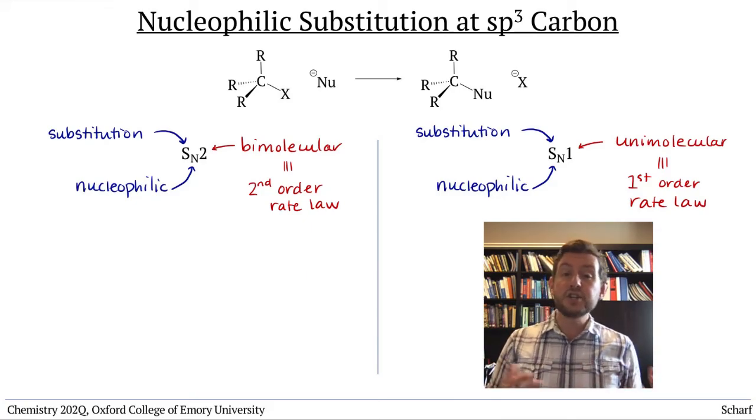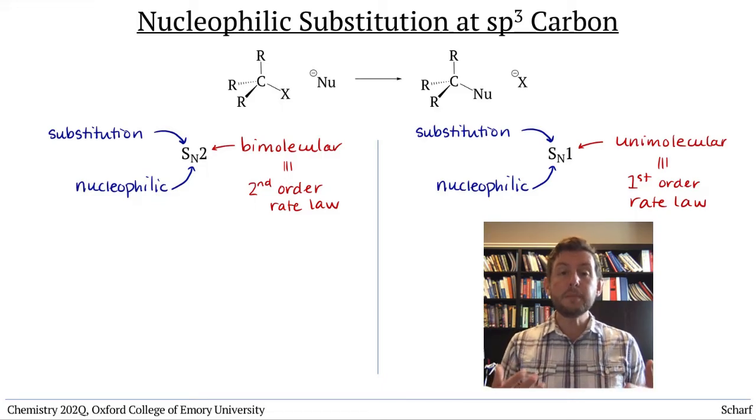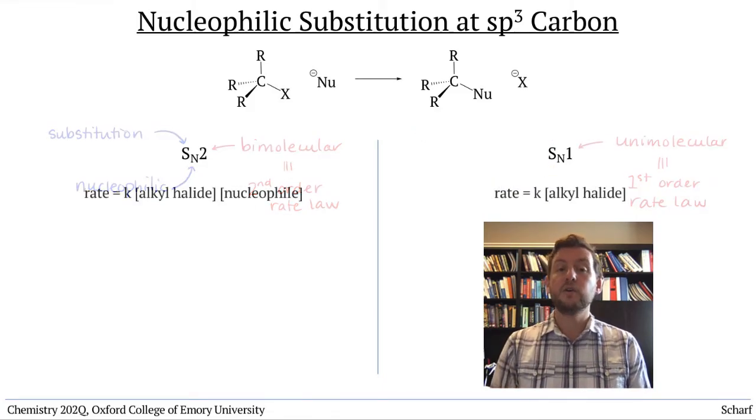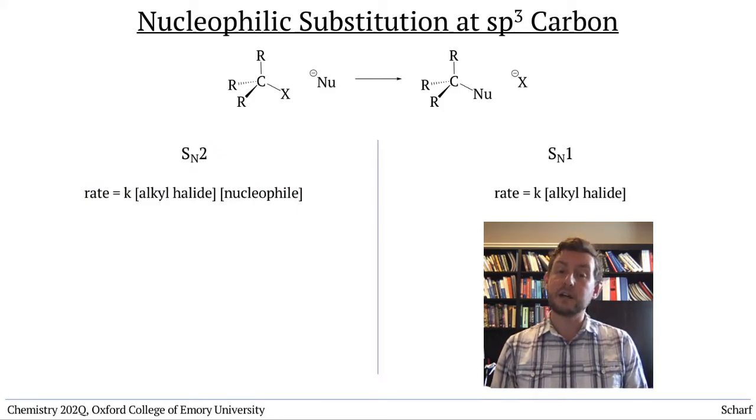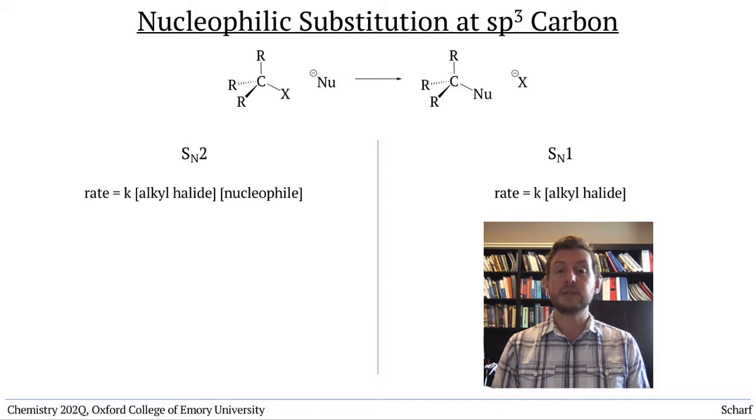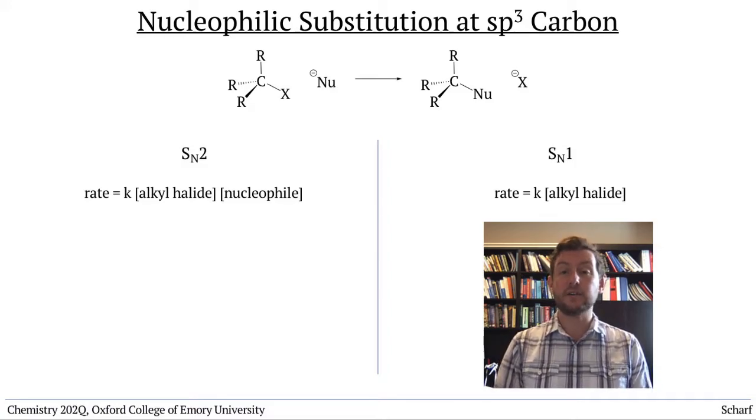For a generic reaction of an alkyl halide by a nucleophile, the two possible rate laws are: rate equals K, the rate constant, times the concentration of the alkyl halide, times the concentration of the nucleophile, or rate equals K times the concentration of the alkyl halide.